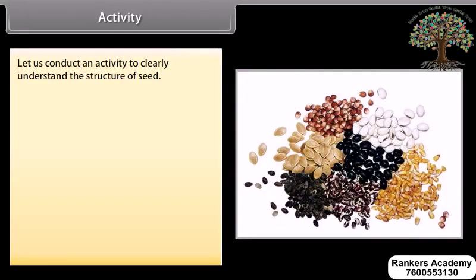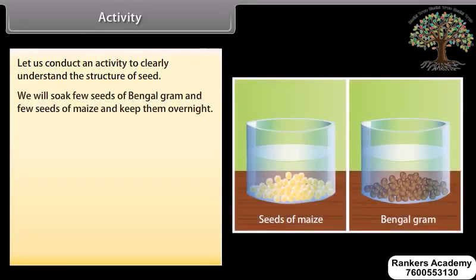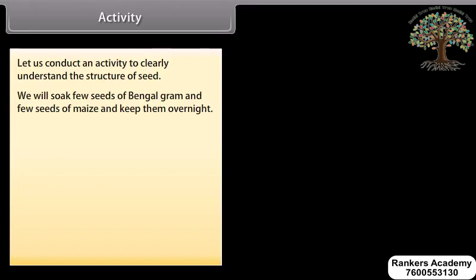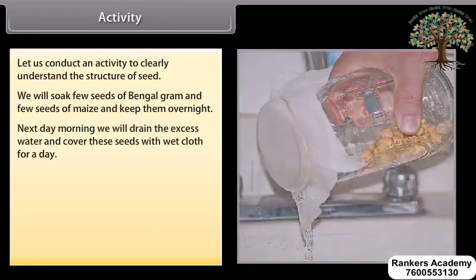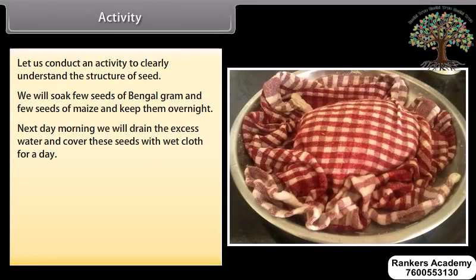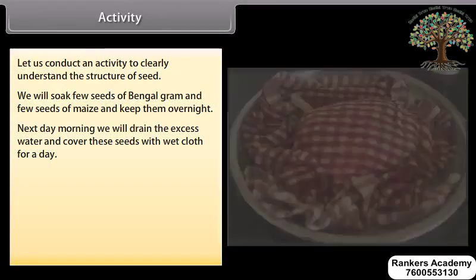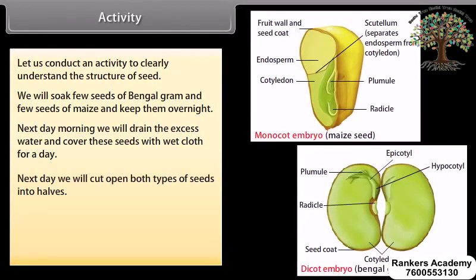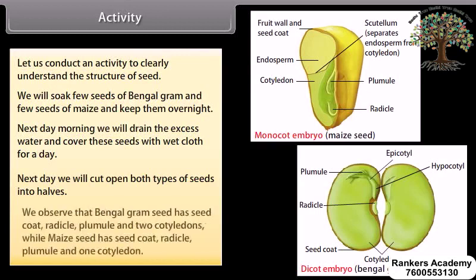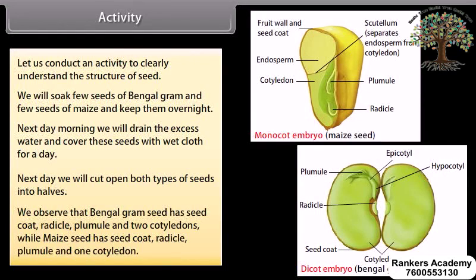Activity: Let us conduct an activity to clearly understand the structure of a seed. We will soak a few seeds of Bengal gram and a few seeds of maize and keep them overnight. Next day morning we will drain the excess water and cover these seeds with wet cloth for a day. Next day we will cut open both types of seeds into halves. We observe that Bengal gram seed has seed coat, radicle, plumule, and two cotyledons, while maize seed has seed coat, radicle, plumule, and one cotyledon.